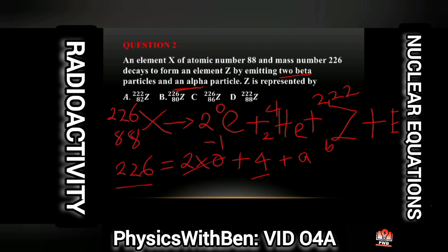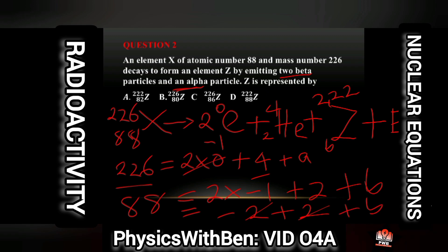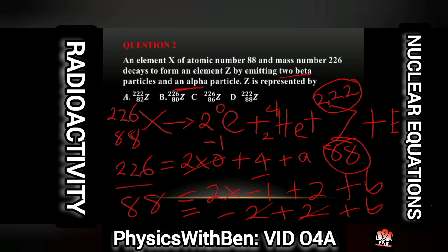For the atomic numbers: 88 equals 2 times (−1) plus 2 plus B. So 88 equals minus 2 plus 2 plus B, which simplifies to B equals 88. Therefore, element Z has mass number 222 and atomic number 88. The answer is option D.